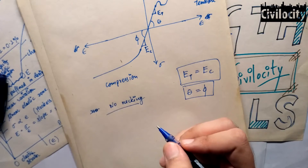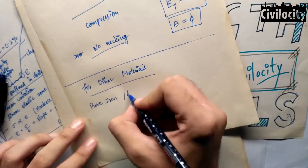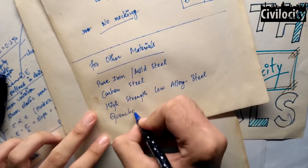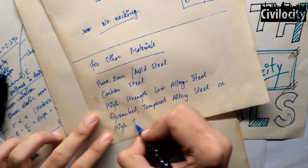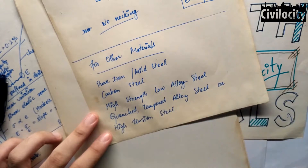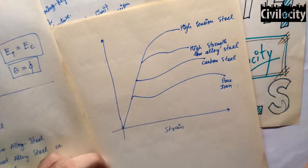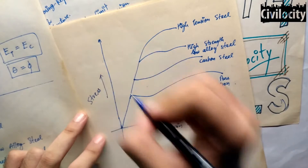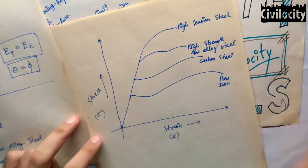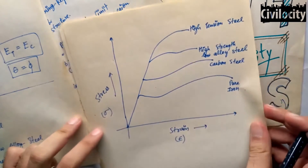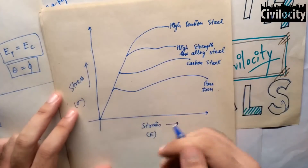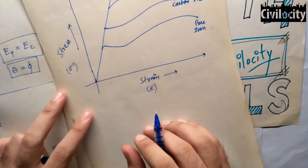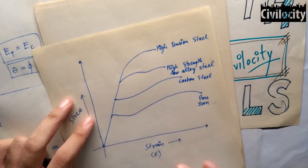Now let's see how other materials behave under stress. For this graph, we have taken pure steel, carbon steel, high strength low alloy steel, and quenched or tempered alloy steel. Let's draw the stress-strain curve for these four types of metals. Some physical properties of structural metals such as strength, ductility, and corrosion resistance can be greatly affected by alloying. As we move upward, the rupture strain decreases, because of the percentage of carbon present in these four types of metals. With the increase in carbon percentage, steel gets higher yield stress and higher ultimate stress, but the fracture strain reduces.